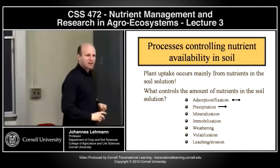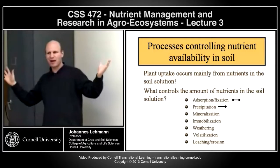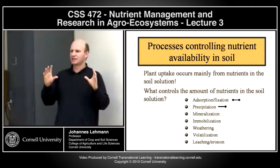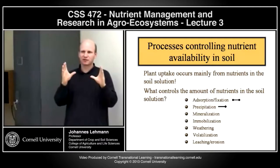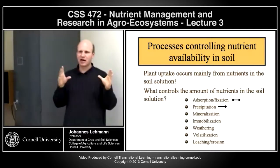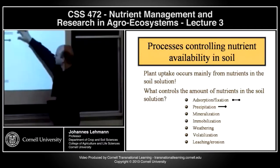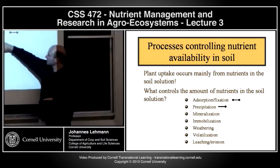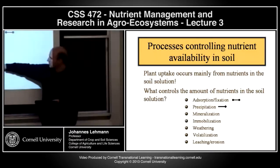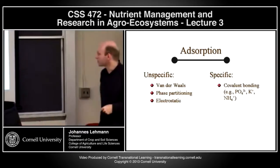That brings us to the end of the boxes. Going back to our first session where we drew the nutrient cycles with all the pools and all the arrows — we filled the boxes. We now know more or less what's in the boxes and how large they are. Now we move to the arrows — the transformation from one pool to another. Over the next few sessions we will discuss adsorption and nutrient fixation, precipitation, mineralization and immobilization, weathering, volatilization, leaching, and erosion. A very important one to start with is adsorption.